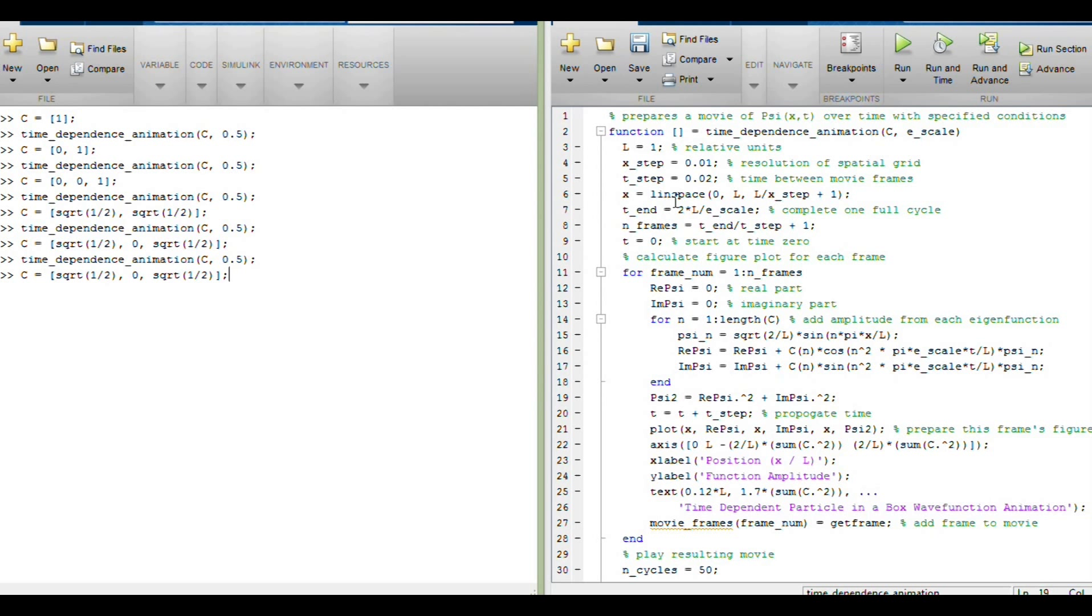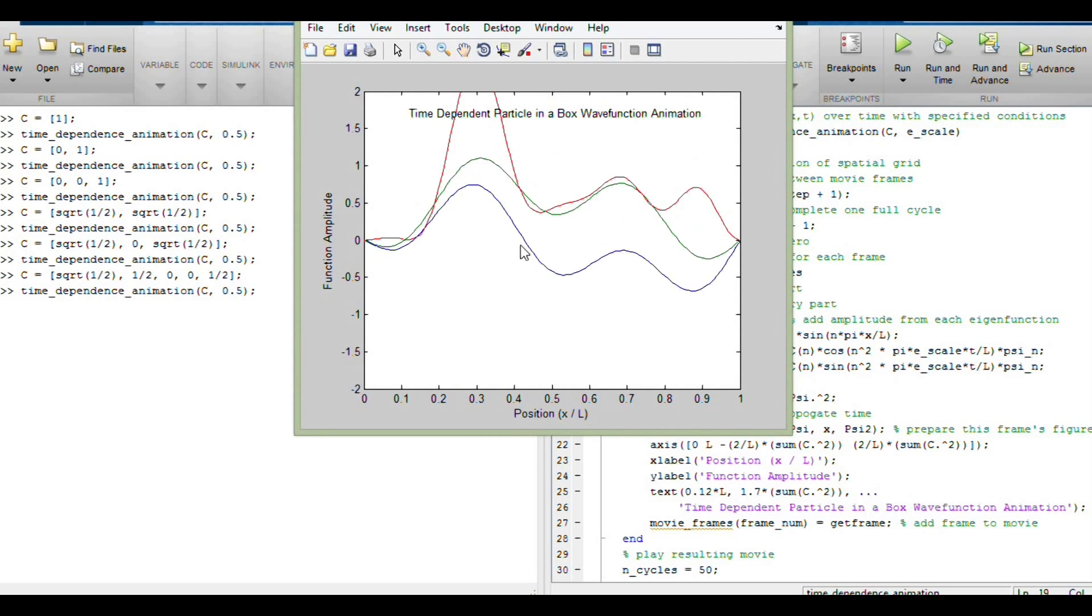And then finally, let's look at the example we gave for calculating expectation values within the superposition principle where we have part in n equals 1, part in n equals 2, and then part in n equals 5. Let's see what this looks like. And you can see, as was the case for the classical wave equation, this quickly gives a lot of wavy nonsense.